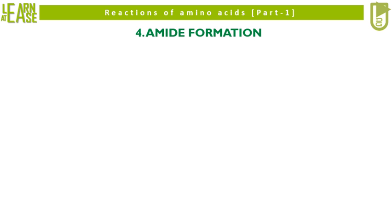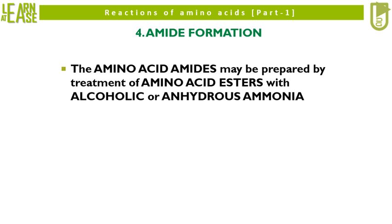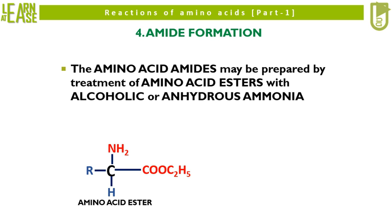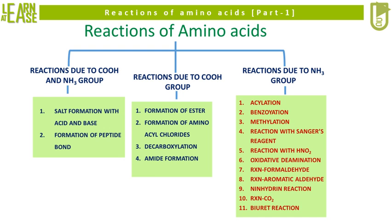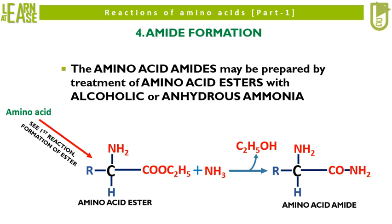The fourth and last reaction is amide formation. Amino acid amides may be prepared by treatment of amino acid esters with alcoholic or anhydrous ammonia. The starting compound is the amino acid ester formed from amino acid, as described earlier in this video, which when treated with alcoholic or anhydrous ammonia yields the amino acid amide. Carefully see the reaction to understand the mechanics.